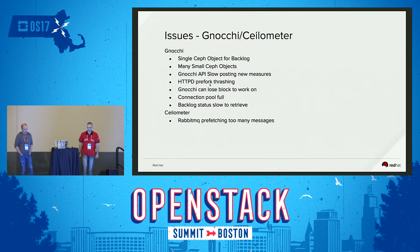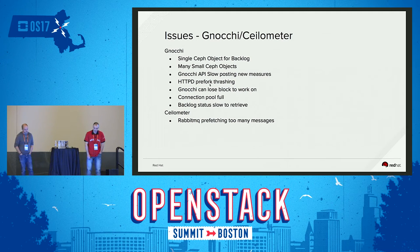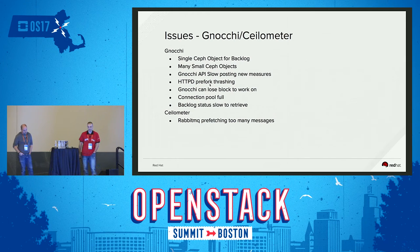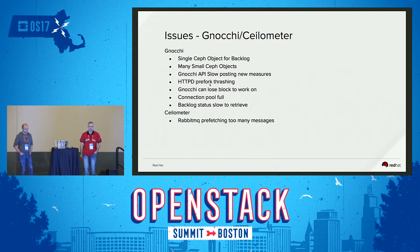The main issues identified from testing: the single Ceph object for backlog — there's already a patch out there, so there won't be a single Ceph object for backlog anymore. Many small Ceph objects is a bit more difficult. The Gnocchi API was slow posting new measures. Apache had thrashing. Gnocchi could lose the block to work on. The connection pool was seen getting full — liburl3 only allows around 15 connections, and we have 64 executors inside Ceilometer, so they're all fighting for those 15 connections. Also, Ceilometer and RabbitMQ were prefetching too many messages.